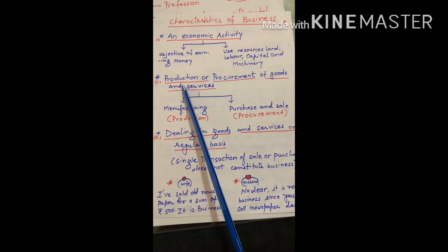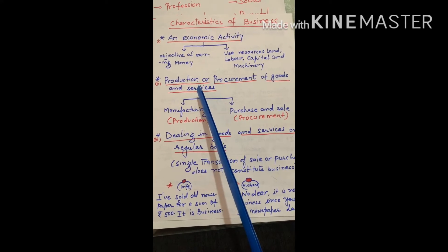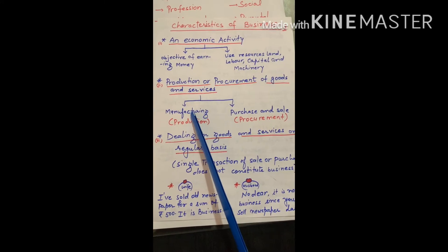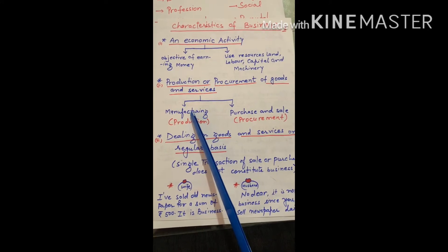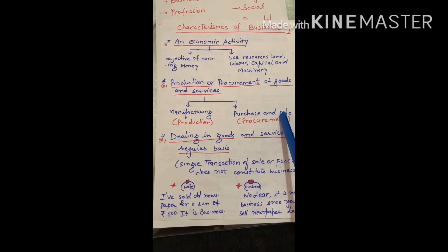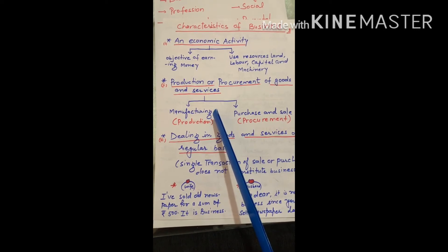Second is production and procurement of goods and services. Now we will take an example of bakery.